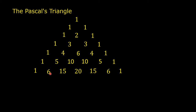The diagonal next to the outside numbers contains counting numbers: 1, 2, 3, 4, 5, 6 on both sides of the triangle.